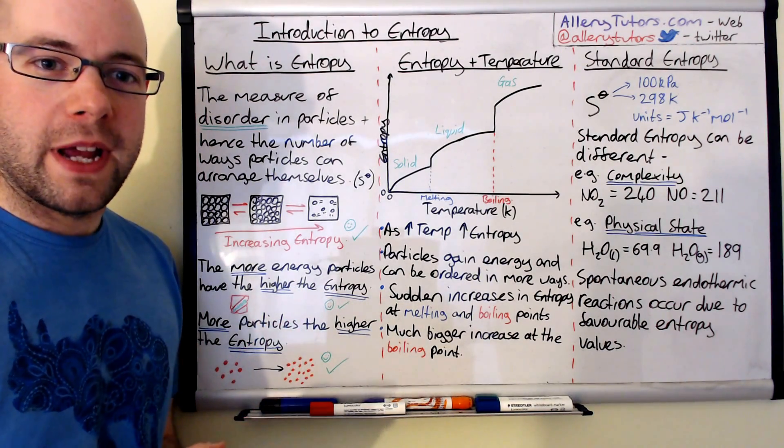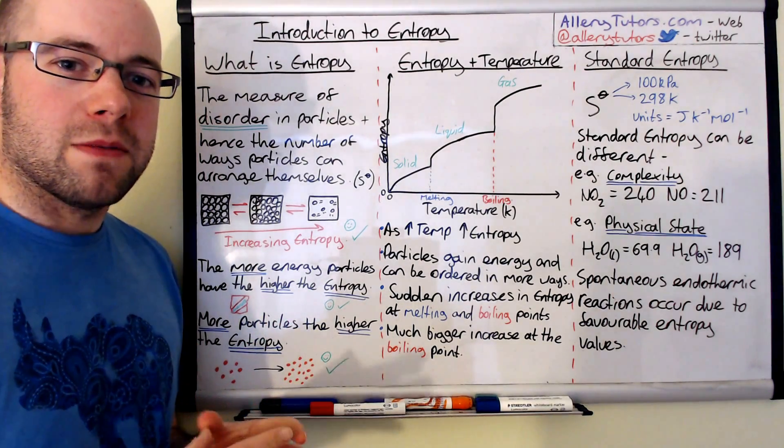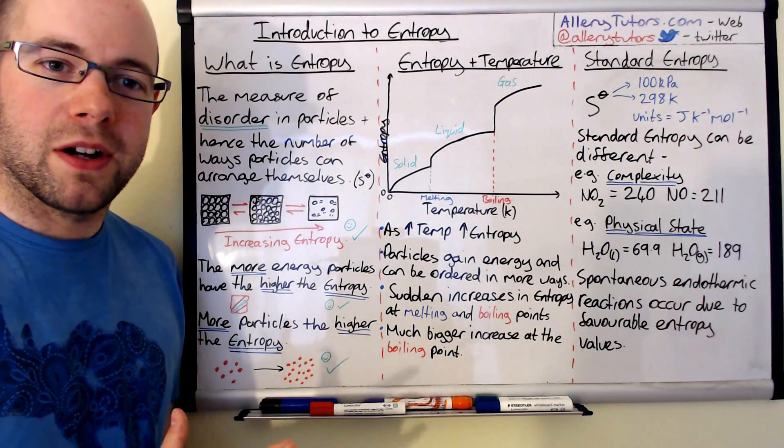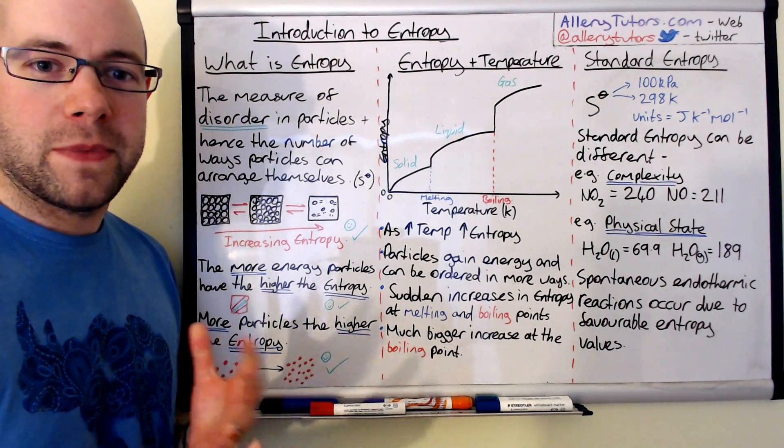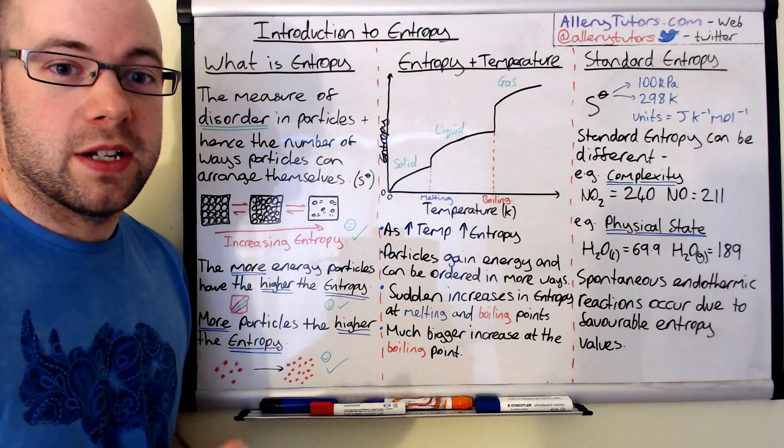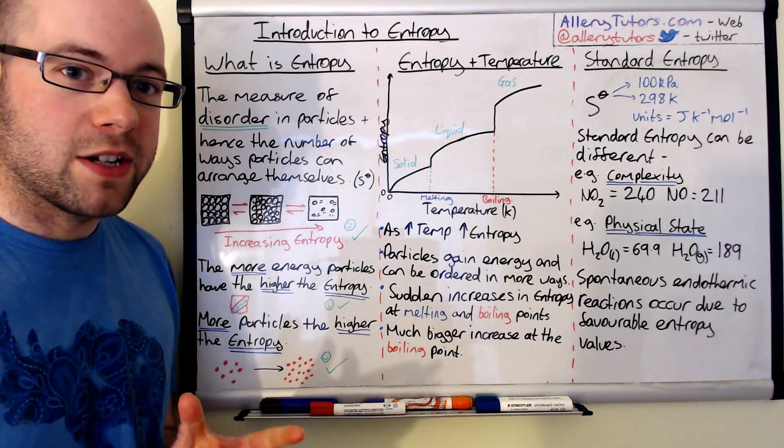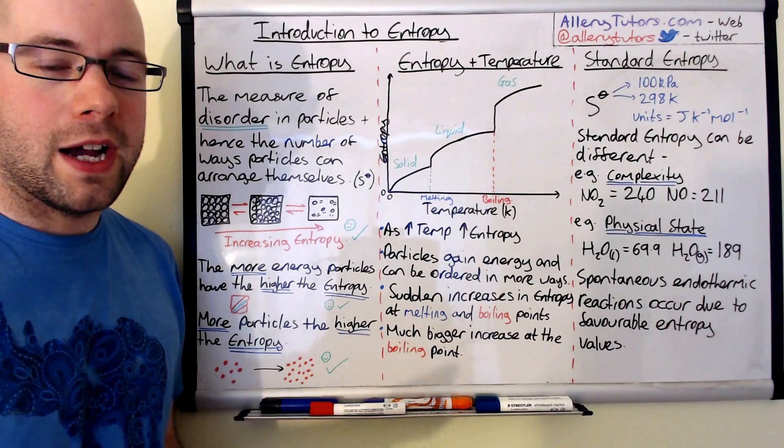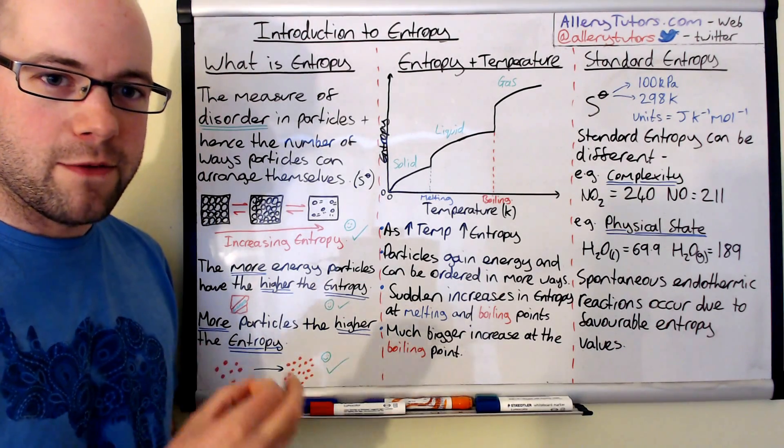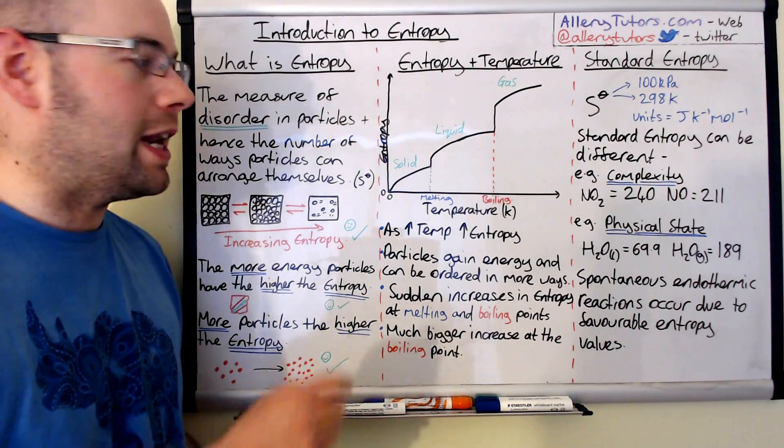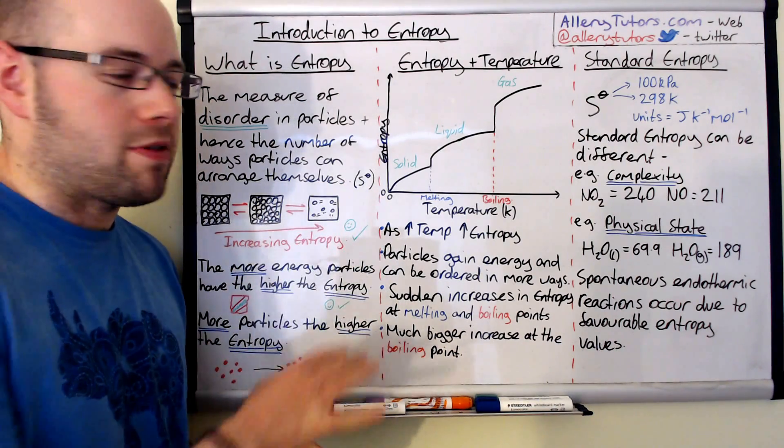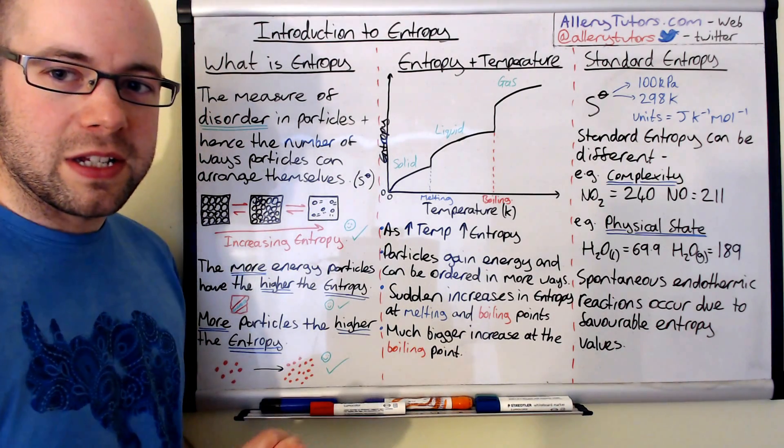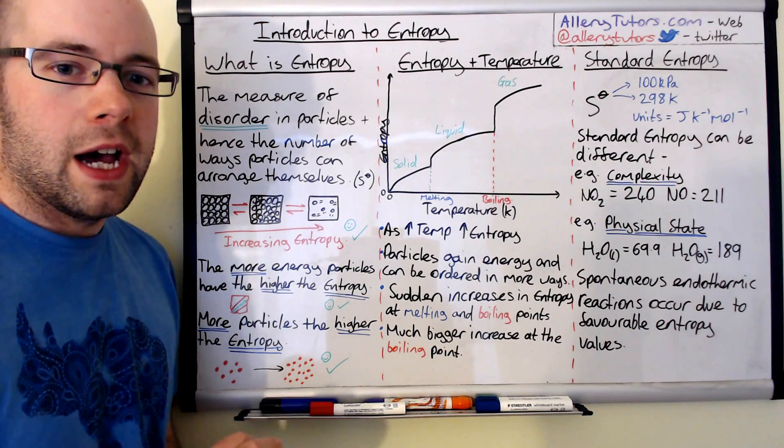We're going to start with what entropy is first. Entropy is the measure of disorder in particles. Basically we're looking at the number of ways the particles can arrange themselves. The more ways the particles can arrange themselves, the higher the entropy, and that would be a favorable process. Entropy is given the letter S, and the little circle symbol above that tells us this is in standard conditions, which we'll come to later.